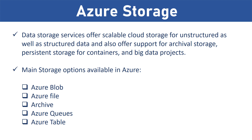Azure Blob storage — within the storage account, it is used to store unstructured data such as media files and documents. Azure File — used when you want to share files between two virtual machines; you can create an Azure File Share and access it on both VMs. Archive — recently introduced (currently in preview), it is used for cost optimization; you can move infrequently accessed blobs or files into the archive to reduce costs.